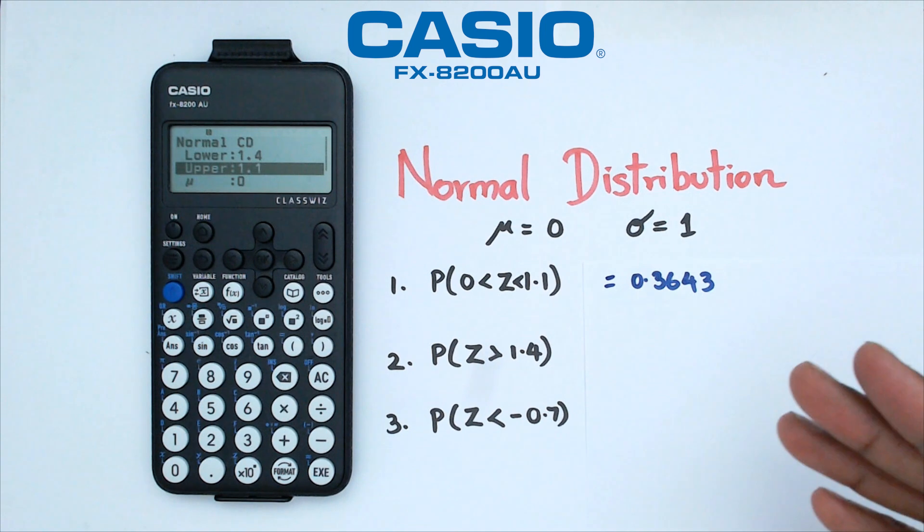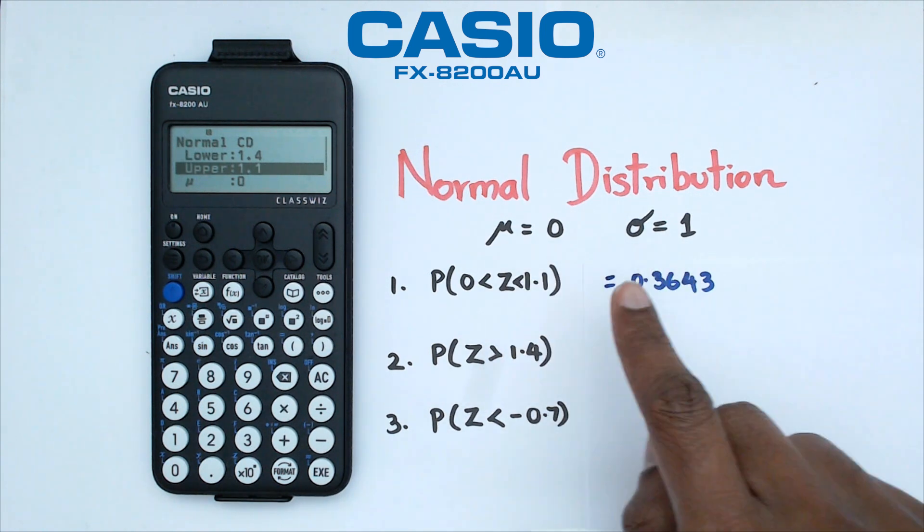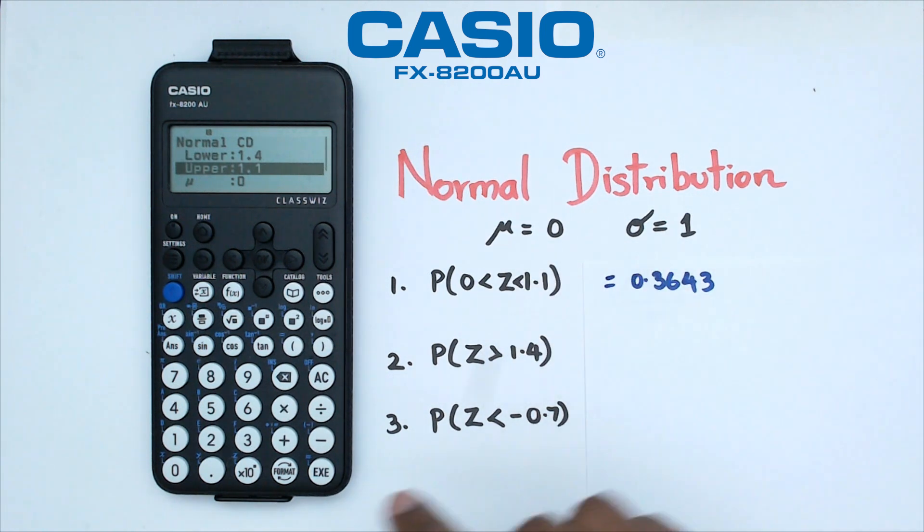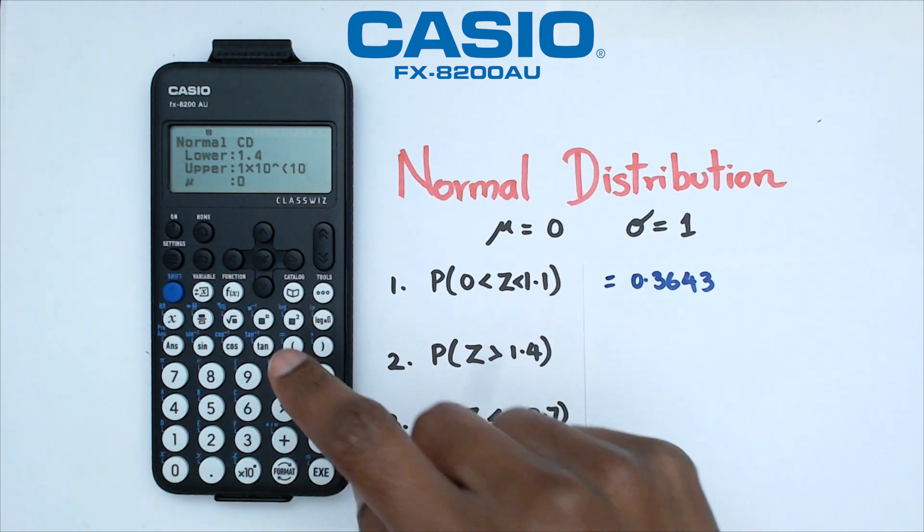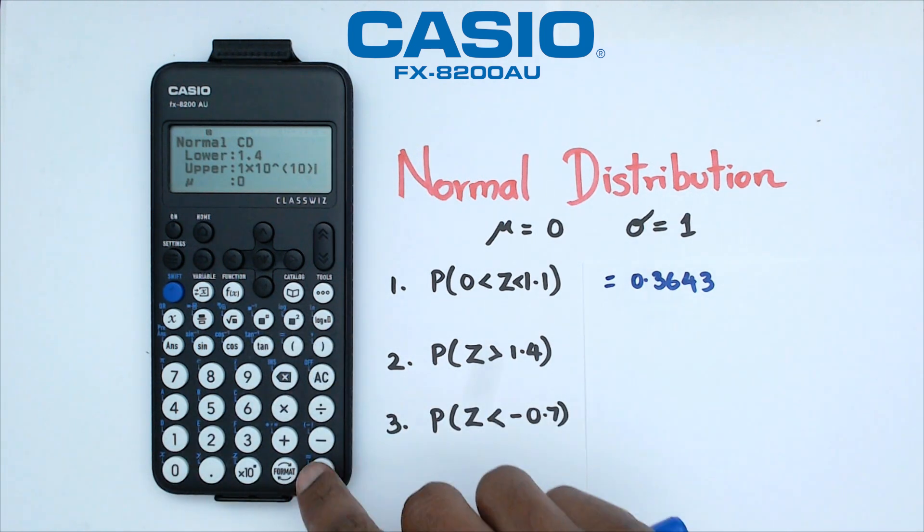Now, generally speaking, five should cover it when you're working with zero and one. But when you're working with real values, I always like to do one times 10 to the power of 10, just to kind of make that a very large number there.